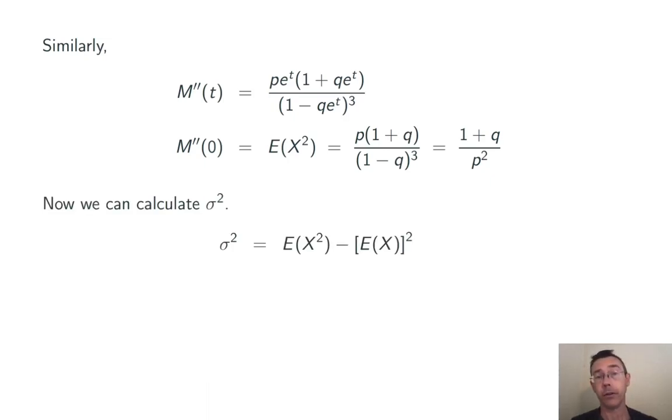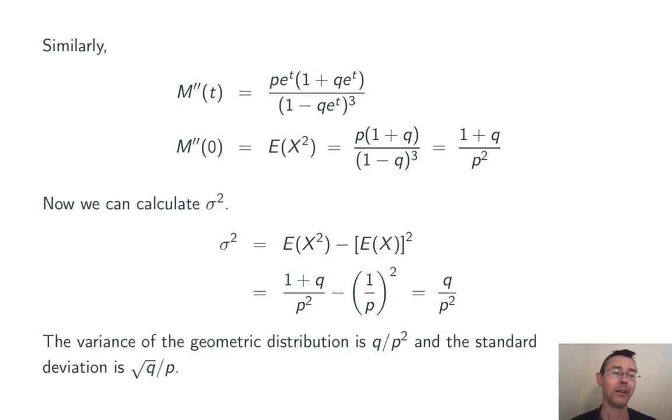Now we're ready to calculate variance using the formula that we saw a few slides ago. The variance is going to be the expected value of x squared minus the expected value of x quantity squared. Plugging in the values we already computed and simplifying, we get the variance of the geometric distribution. It's q over p squared. The standard deviation then is the square root of this, square root of q over p.